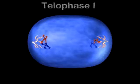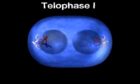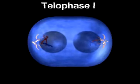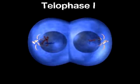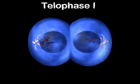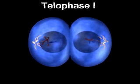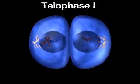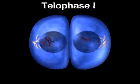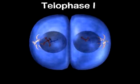During telophase I, the spindle is broken down, the chromosomes uncoil, and the cytoplasm divides to yield two new cells, each with half the number of chromosomes.